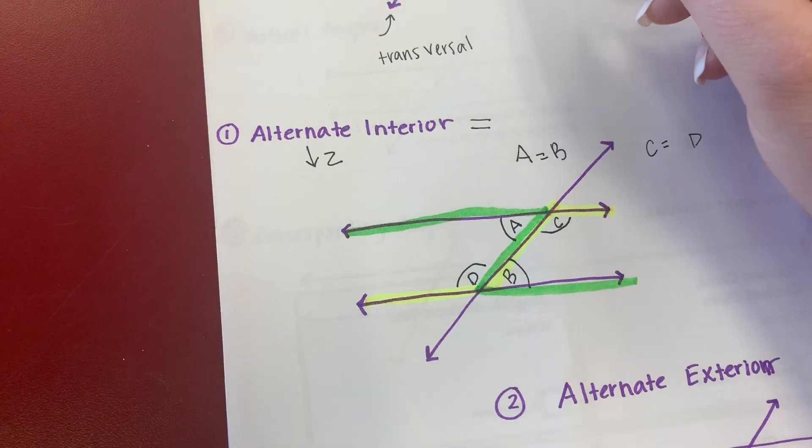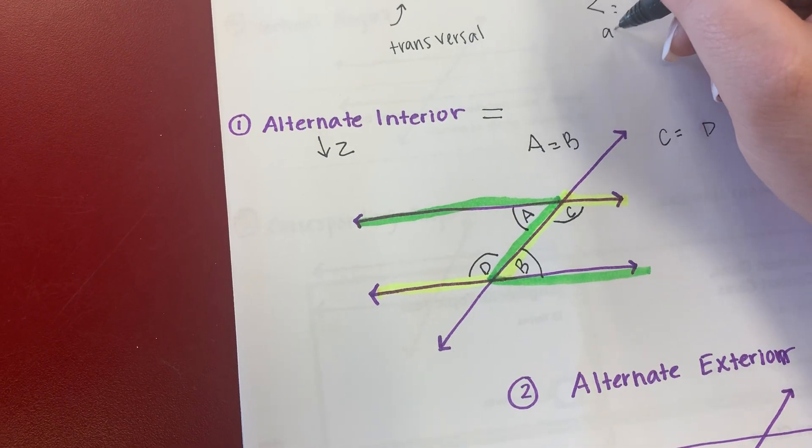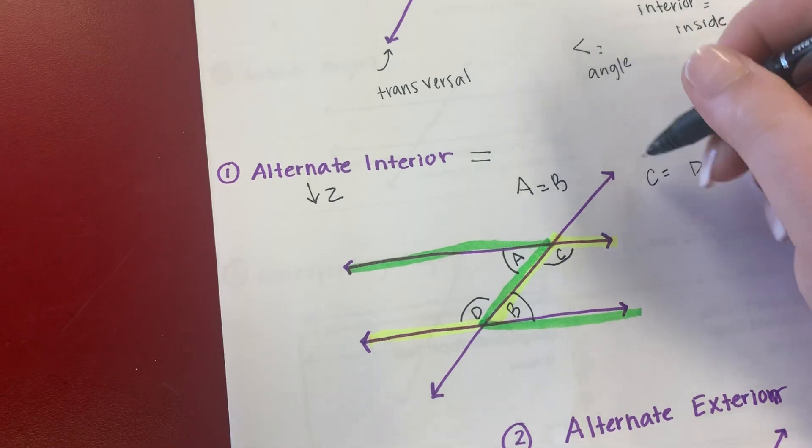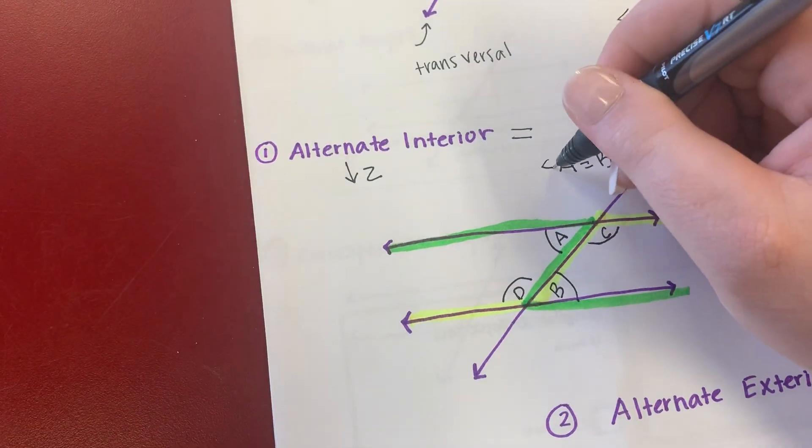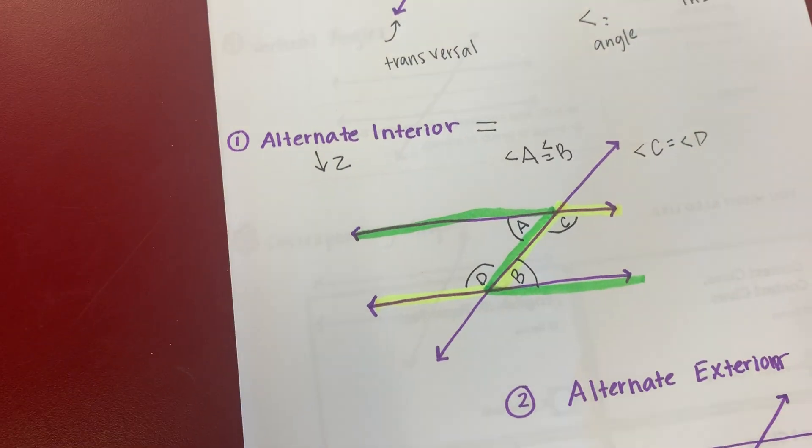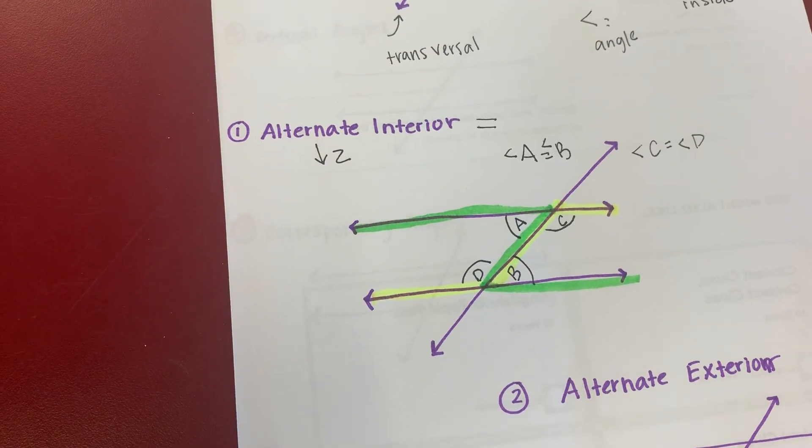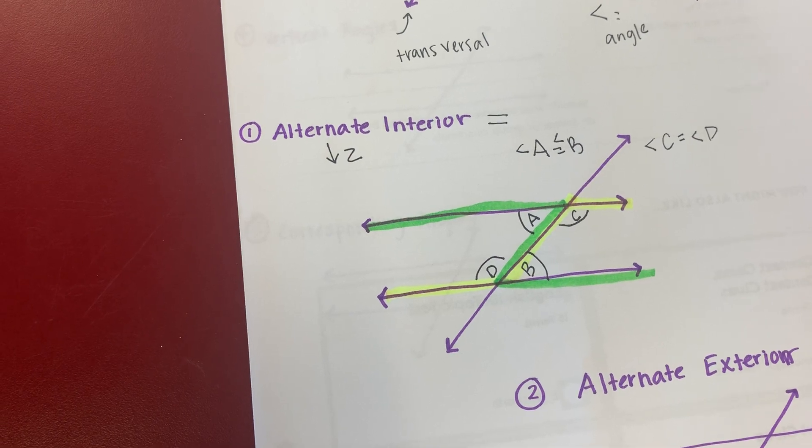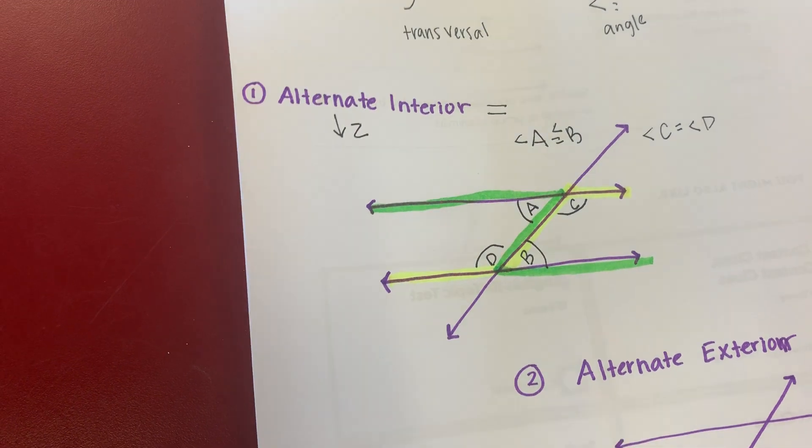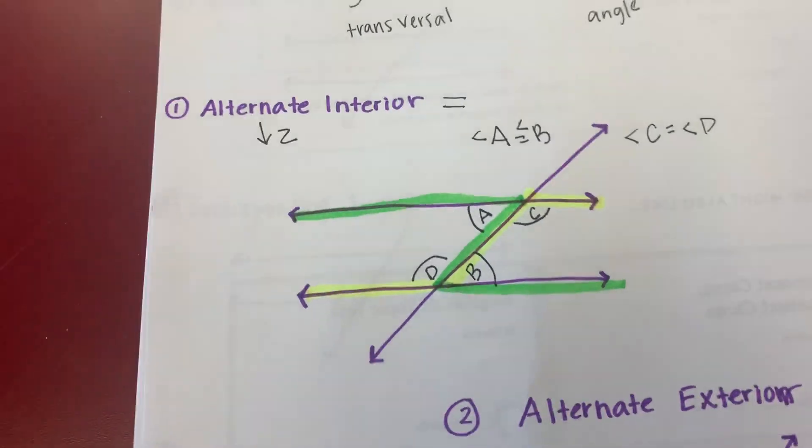Another key term, this means angle, that symbol right there. So I'm saying angle C equals angle D. Angle A equals angle D. So whenever you hear alternate, alternate interior, automatically draw your lines. Let's continue on.